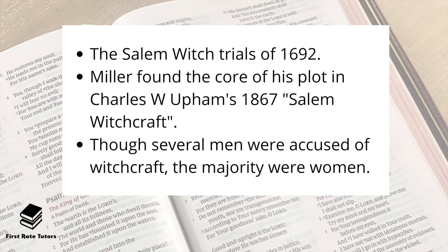One judge, Samuel Sewall, repudiated the trials and formally apologised. He would go on to write the first attack on slavery in America. Hale, the great-grandfather of American Revolutionary War hero Nathan Hale, had changed his mind late in the proceedings after his wife was also accused of witchcraft. She was acquitted, and he went on to publish a highly critical text on the proceedings, A Modest Enquiry into the Nature of Witchcraft, in 1697. In 1702, the general court declared the 1692 trials unlawful, and by 1711 restitutions were made to victims. In 1752, Salem Village was renamed Danvers, and it would not be until 1957 that Massachusetts made a formal apology. On the 300th anniversary in 1992, a park in Salem was opened with a stone bench in memory of those executed, and Miller did speak at this dedication ceremony.